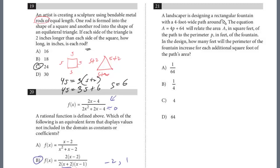A landscaper is designing a rectangular fountain with a 4-foot-wide path around it. The equation A equals 4P plus 64 will relate to the area A in square feet of the path to the perimeter P in feet of the fountain. In the design, how many feet will the perimeter of the fountain increase for each additional square foot of the path's area?